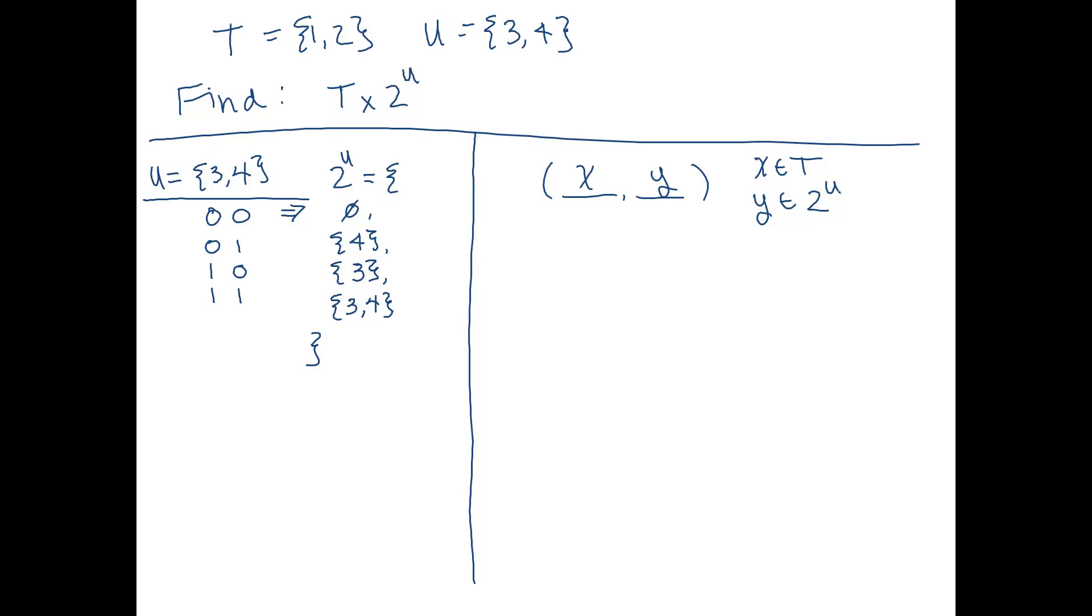Let's start with putting the first element of T in the x place and then the first element of the power set of U in the y place. So that's going to be the empty set. Okay, and then let's keep the first element of T in place and select the next element of the power set of U. It's going to be 4.